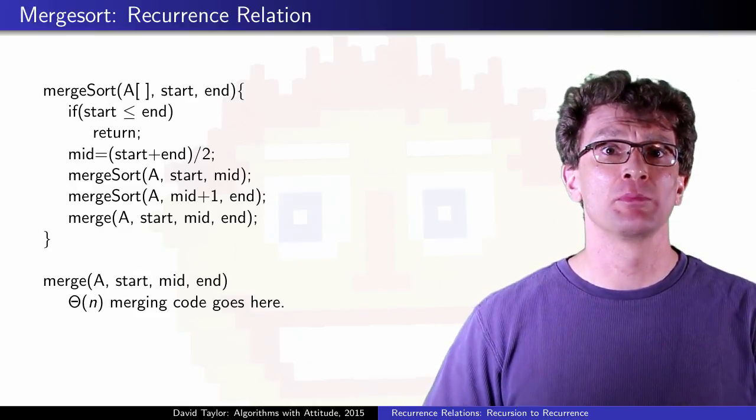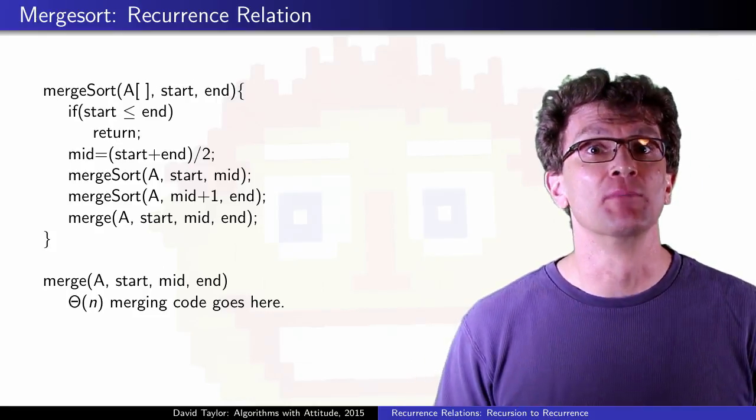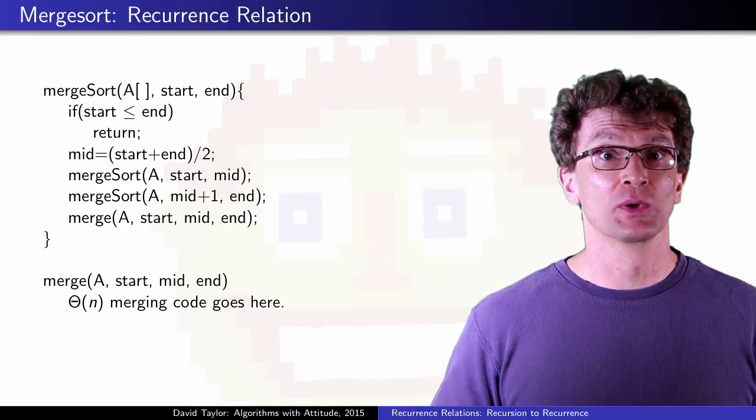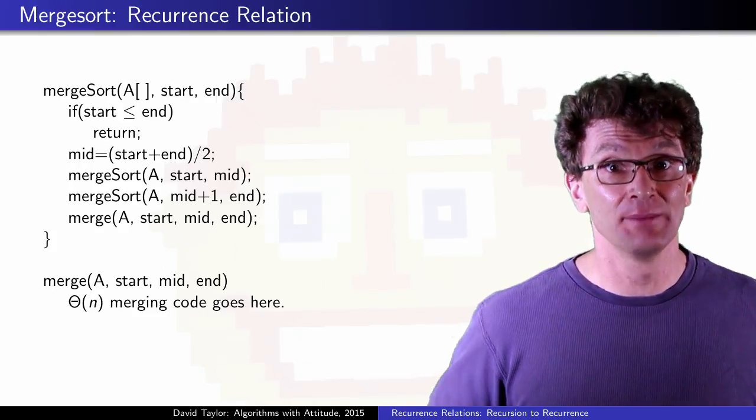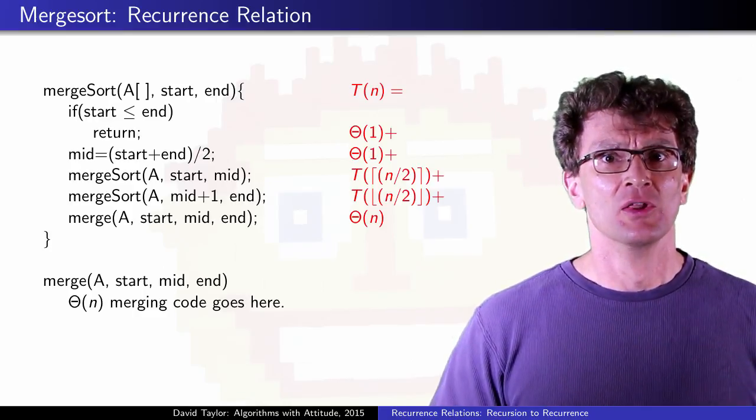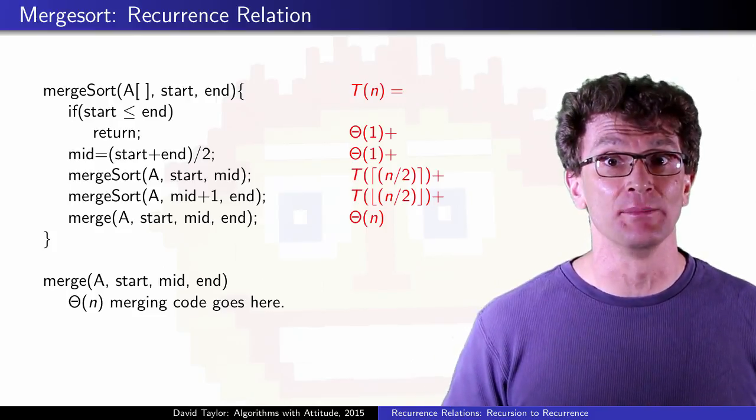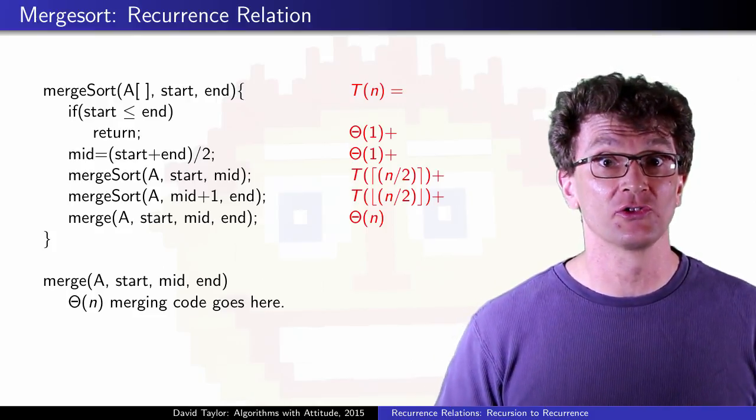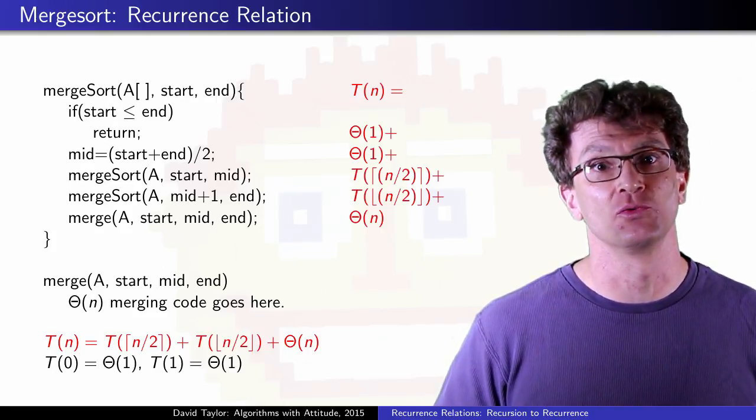Moving on to probably the most widespread computer science recurrence relation example, we look at merge sort. For that program, we recursively sort the first half of the array, and then the second half, and then merge the two sorted halves together to sort the entire array. The merge and all the non-recursive calls take linear total time, and the two recursive calls are each to about half of the array, so we get a recurrence like this one.